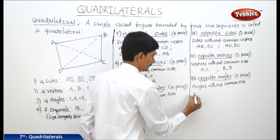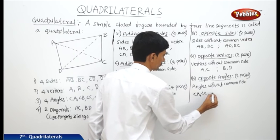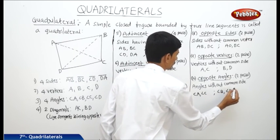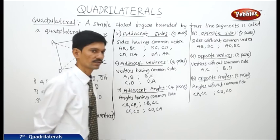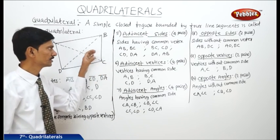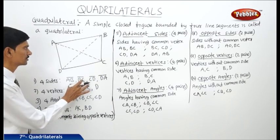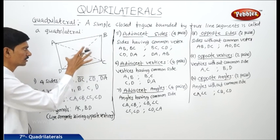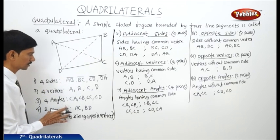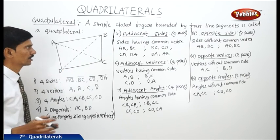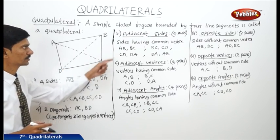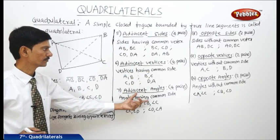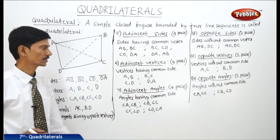So we can write angle A, angle C and angle B, angle D. Now in the quadrilateral ABCD, there are 4 sides, 4 vertices, 4 angles, and 2 diagonals, and there are 4 pairs of adjacent sides, 4 pairs of adjacent vertices, and 4 pairs of adjacent angles.